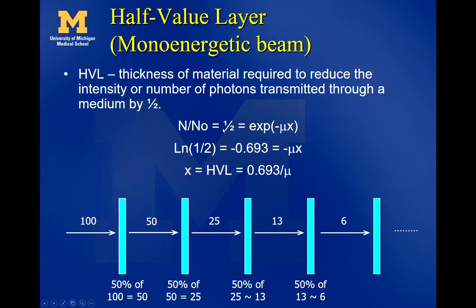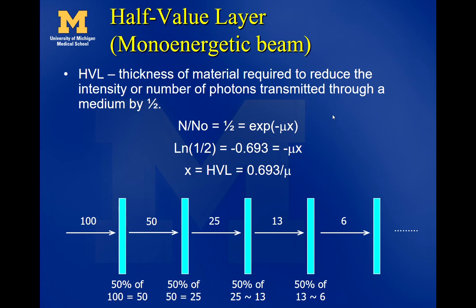A very useful quantity is the half value layer (HVL). For a mono-energetic beam — which is the case in brachytherapy but not typically in radiotherapy using linacs — the HVL is the thickness of material required to reduce the intensity of x-ray photons transmitted through the medium by one half. Simply put: if you're detecting 100 x-rays and want 50, the HVL is how much material you must place between source and detector to achieve that.